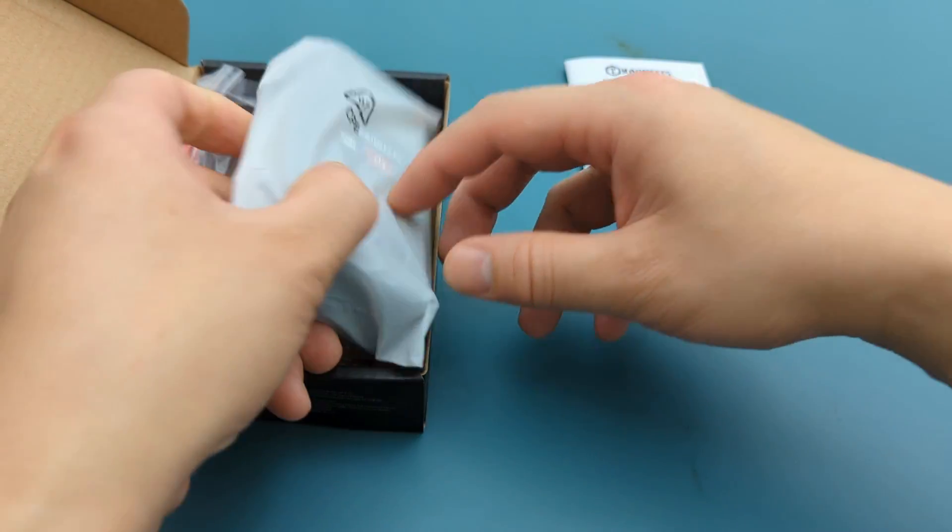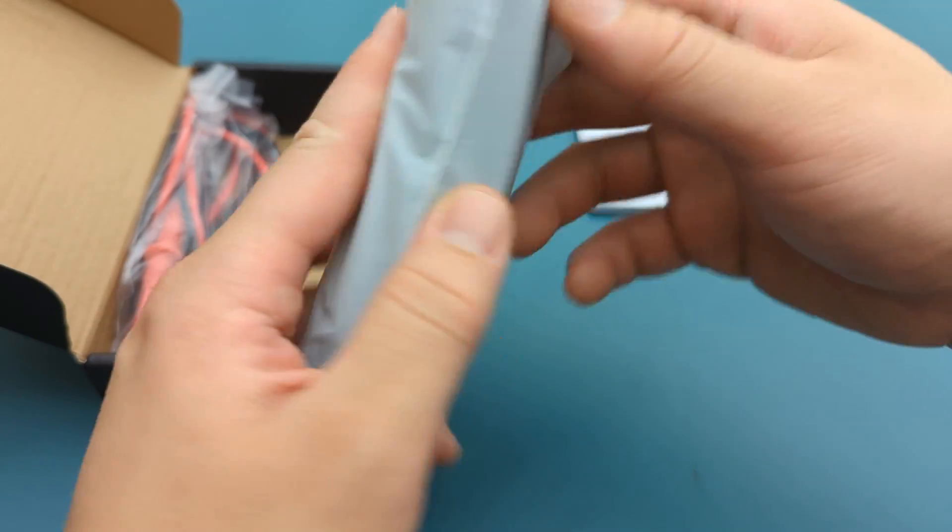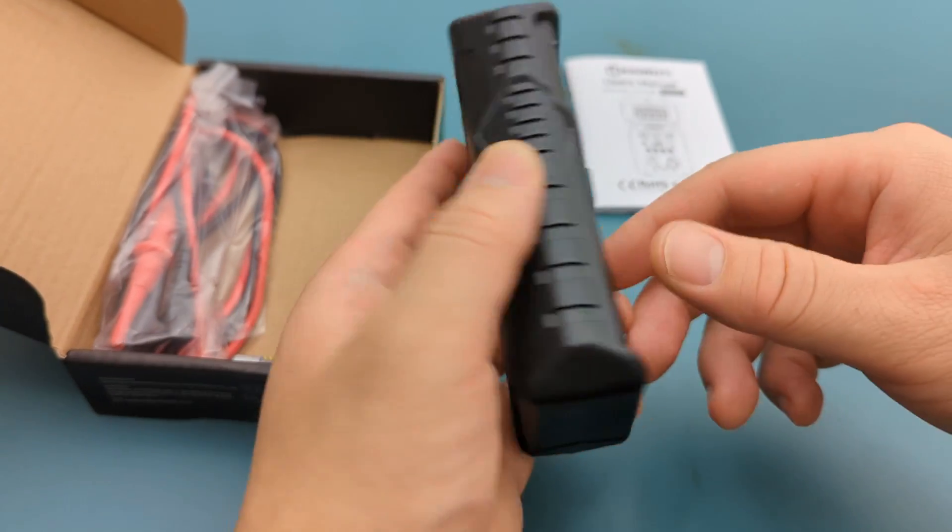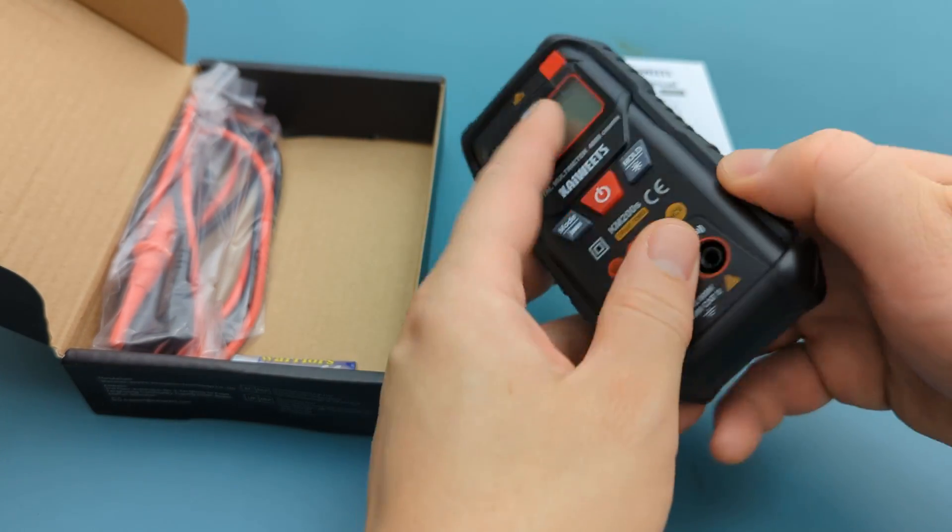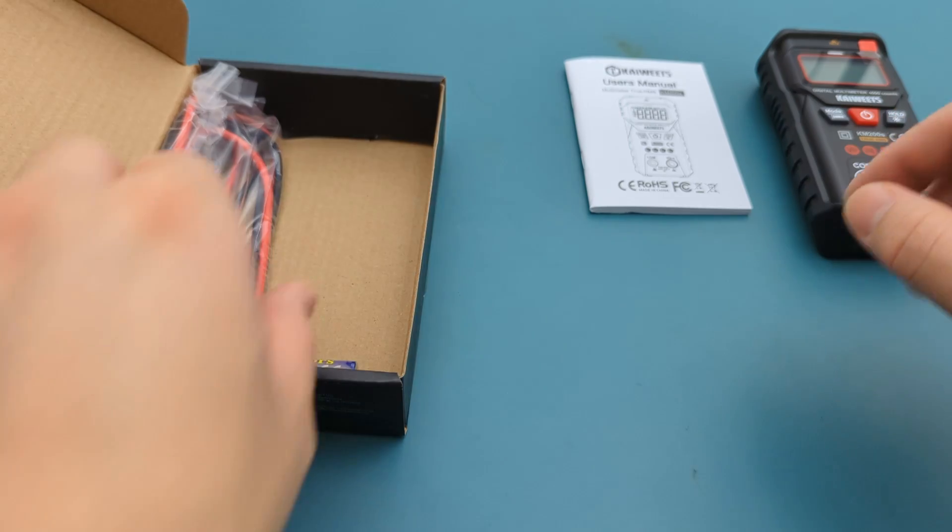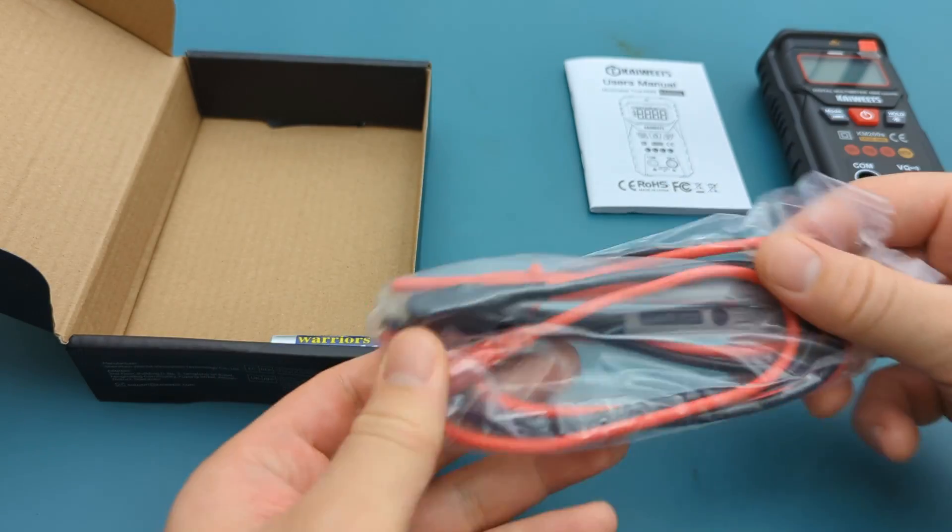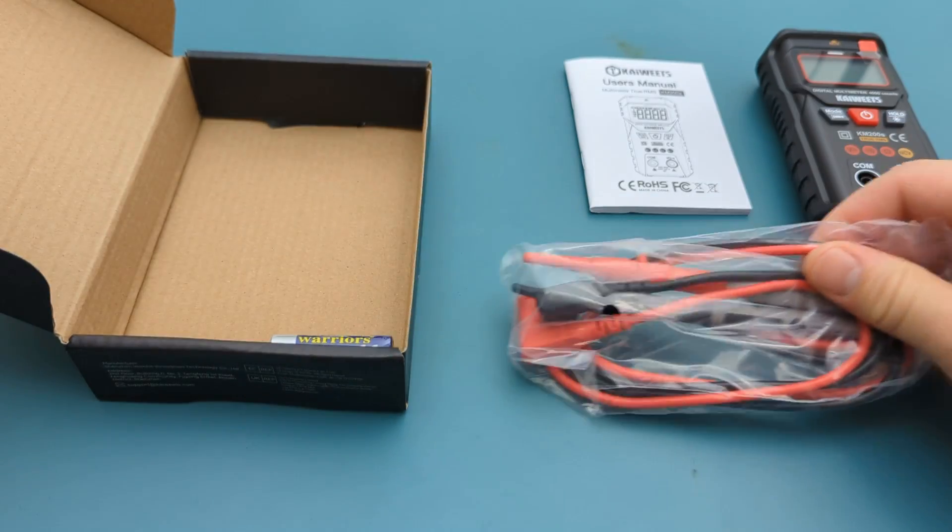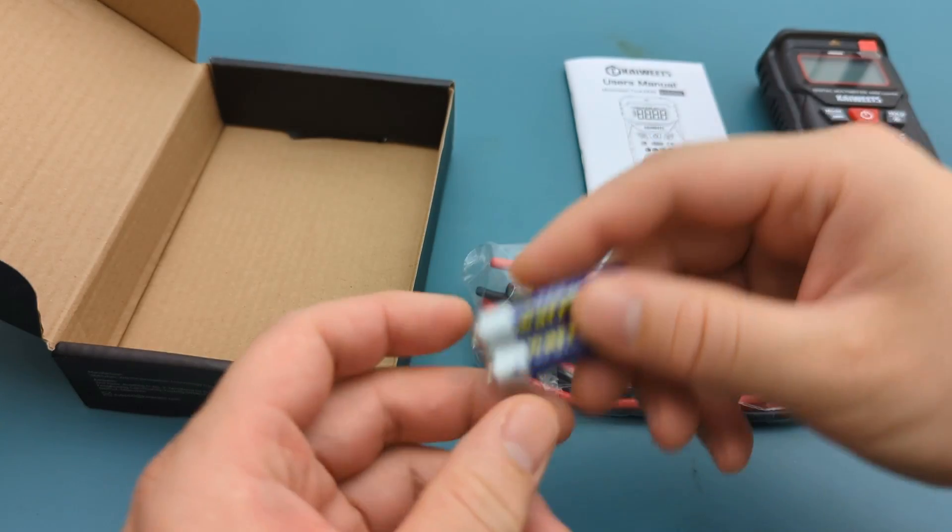There is a multimeter. There are the probe leads. There are two AAA batteries.